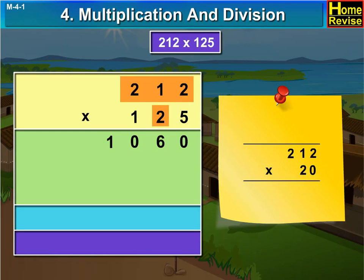Now, multiply 212 by 2 tens. 2 twos are 4. 2 ones are 2. 2 twos are 4. So, we write 0 after that.